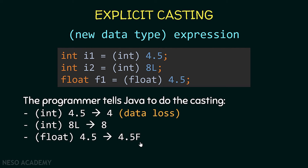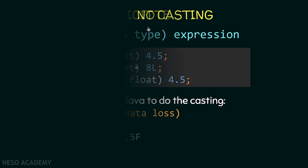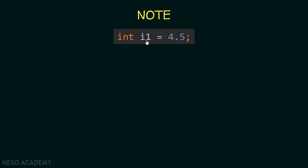A small summary: the type on the right side of the assignment operator should match the type on the left side. When types differ, Java tries to convert the right-side type to the left-side type. If the left side has a wider range, Java does it automatically. If the left side has a narrower range, the programmer must use explicit casting by putting the target data type in parentheses.